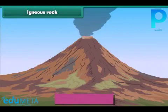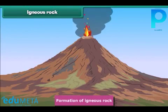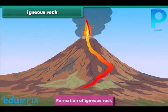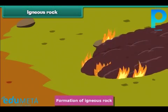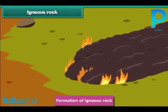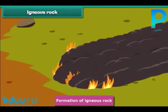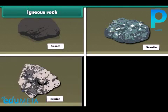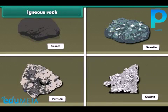Igneous rock is formed when molten rocks like lava in volcanoes cool and get hardened and solidified. It is often shiny and glossy. Basalt, granite, pumice, and quartz are examples of this kind of rock.